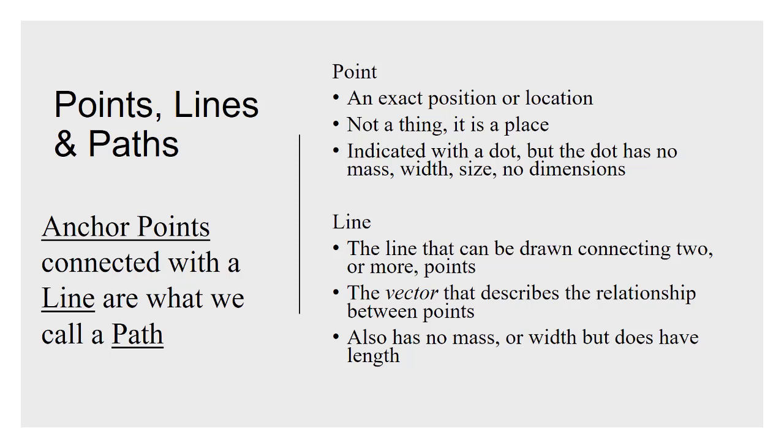A shape is basically a combination of anchor points and lines. Those anchor points are connected with a line, and that's what we call a path. So you take two anchor points, the line that connects those two is called a path.